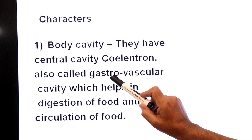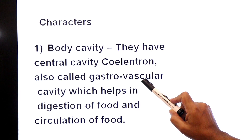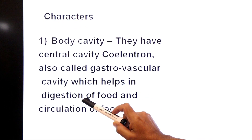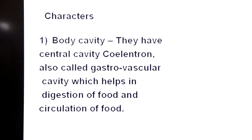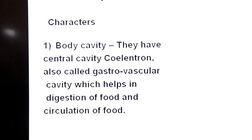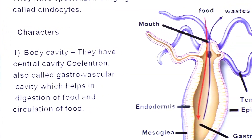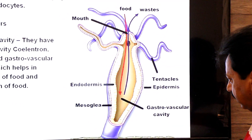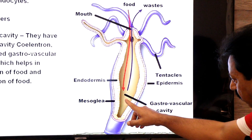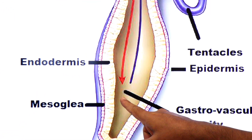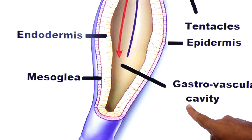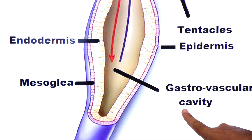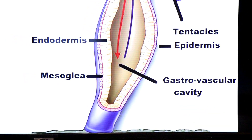The central body cavity is called coelenteron, which is why this phylum has another name: phylum Coelenterata. This cavity is also called the gastro-vascular cavity, which helps in digestion and circulation of food. Looking at the diagram of hydra, you can see the central cavity — this is the coelenteron, also known as the gastro-vascular cavity.